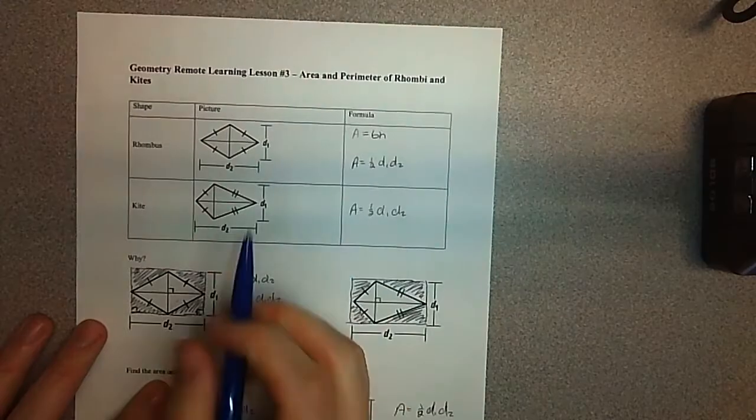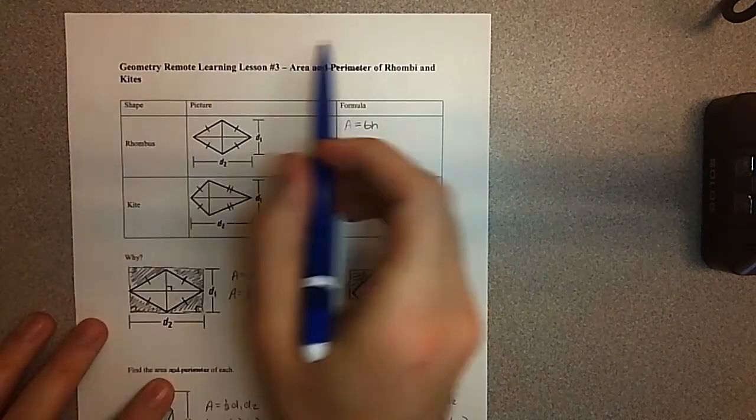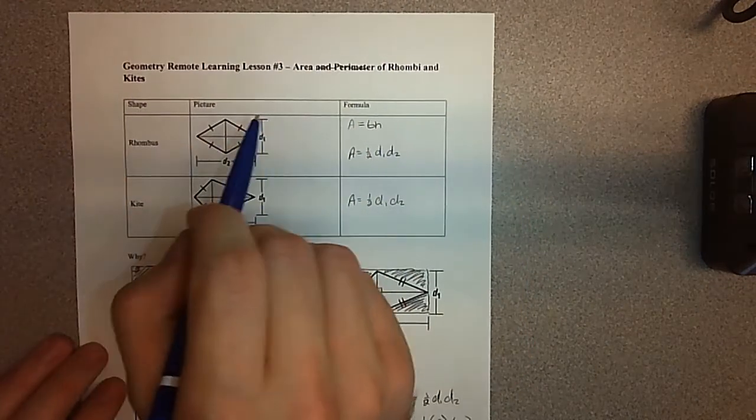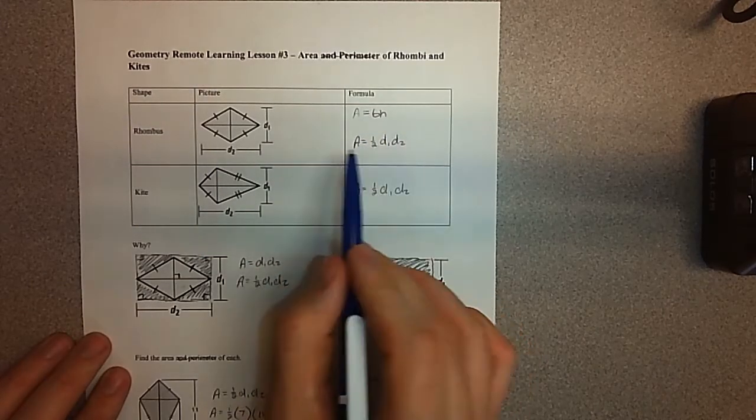So, that is for today. And we actually, I took off this. Instead of area and perimeter, just area of rhombus and kites, because those are a little bit more interesting. Especially rhombus being a parallelogram, talking about the second type of area formula.